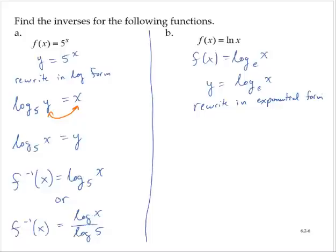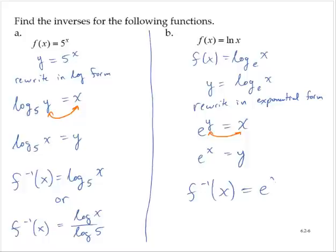Rewriting in exponential form, we have e to the y is equal to x. Invert the variables: e to the x equals y. So f inverse of x is equal to e to the x.